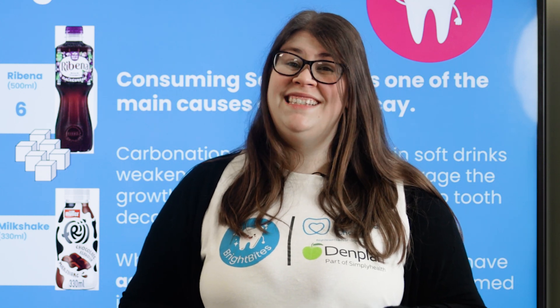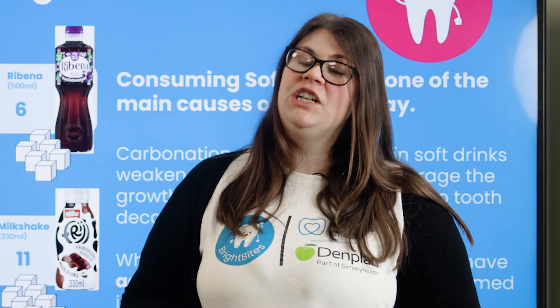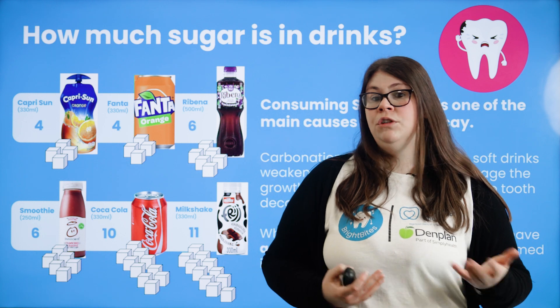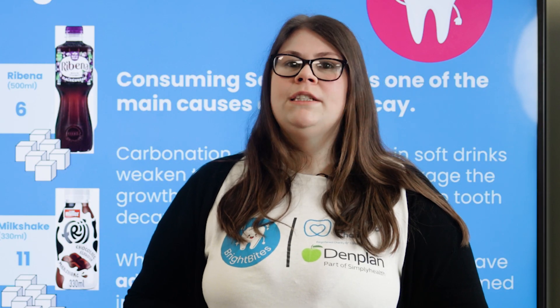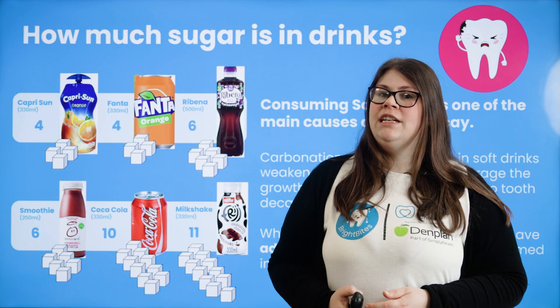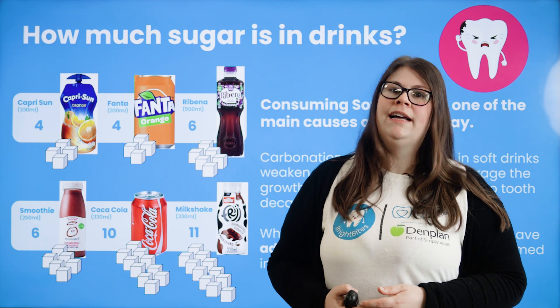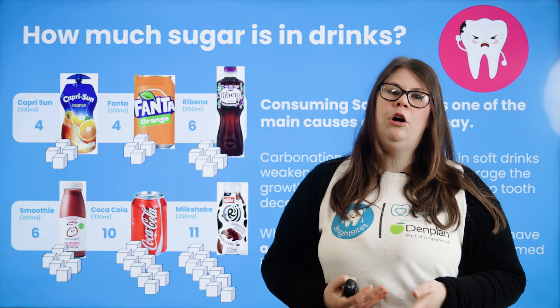Moving on, Ribena has six sugar cubes, and a smoothie also six. Throughout this section, ask the children what they think for each drink. Coca-Cola has ten, and most surprisingly, a milkshake has eleven cubes of sugar. Ask children what other drinks they like at home. Prime is commonly mentioned — it doesn't contain a lot of sugar but isn't a particularly healthy choice. Squash is also commonly mentioned; the recommended drinks are milk or water, and all other drinks should be more of a treat.